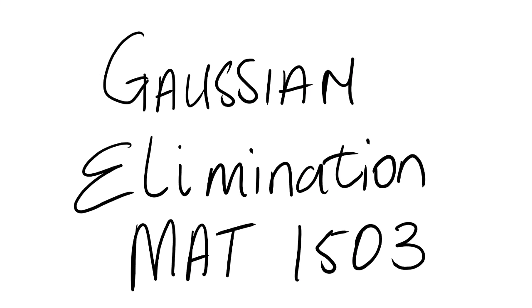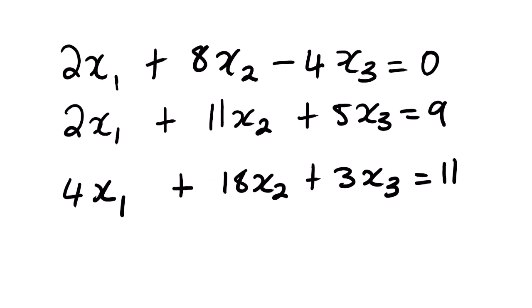Gaussian elimination is the topic for today. This is Mathematics 1503 Linear Algebra A. We use Gaussian elimination method to solve for three equations or two equations having three or more unknown variables. When we have two or three equations with two unknowns it's simple — we can use substitution and eliminate. But when you're looking at three unknown variables it can be difficult, so we must use Gaussian elimination method to calculate the unknown variables.